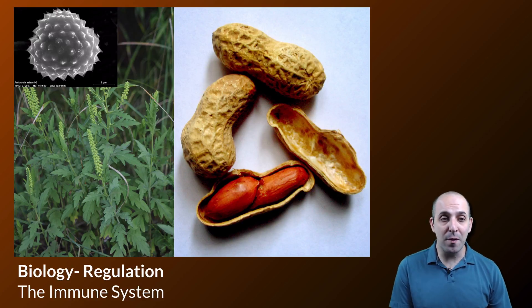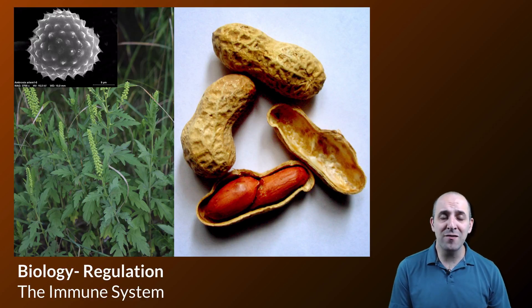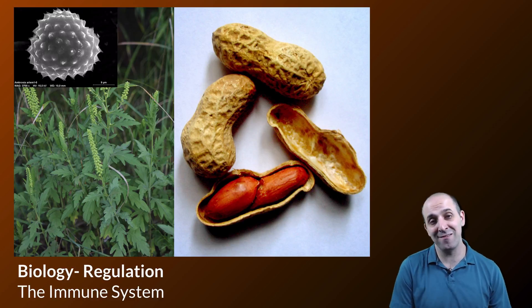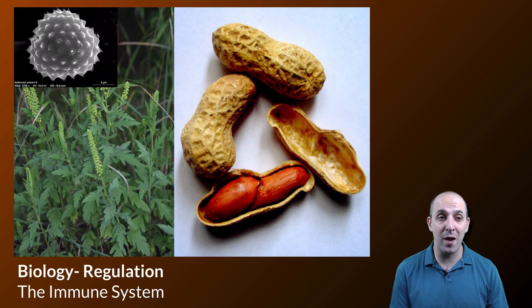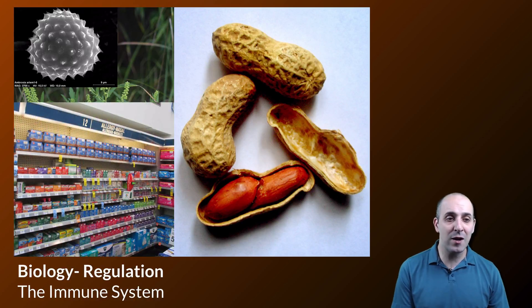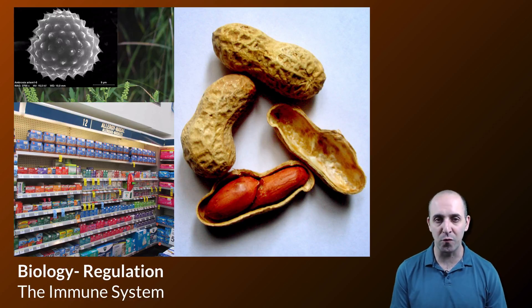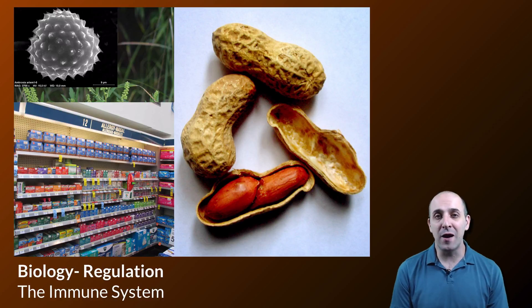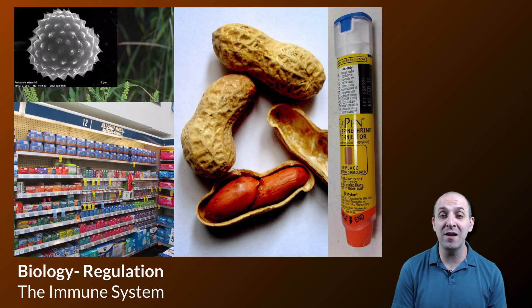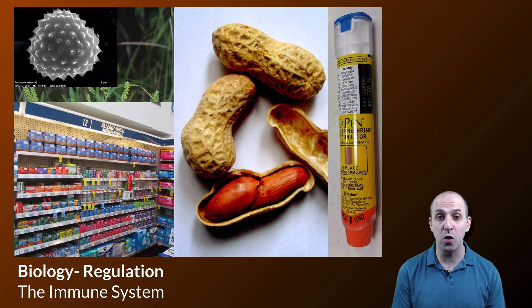I thought I'd start out by talking about ragweed and peanuts. Ragweed and peanuts are two examples of allergies — things that the immune system reacts to when it shouldn't. In the case of ragweed, it's not really a big deal; we just go to the store and get some antihistamines that generally keep us from feeling too miserable. Peanuts, on the other hand, can be a really big deal. Peanuts can trigger anaphylactic shock, which can cause you to die if you have this allergy.